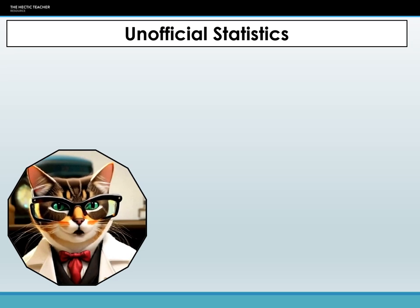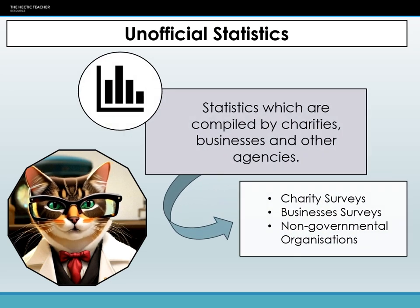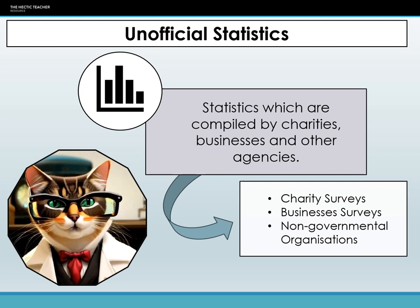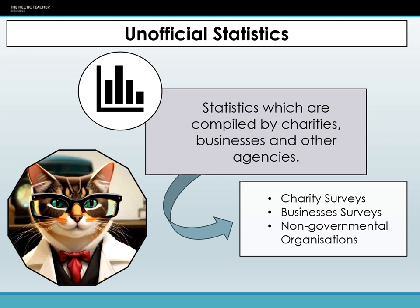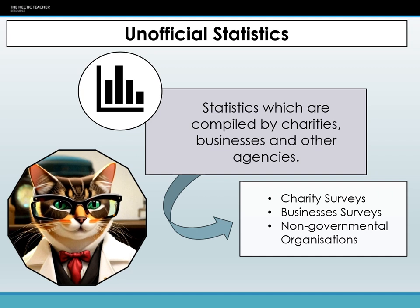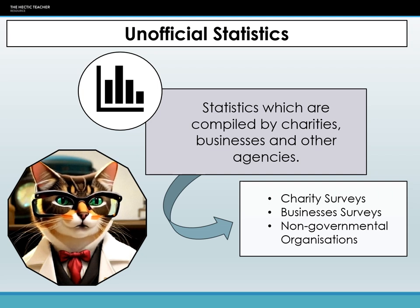Next is unofficial statistics. Unofficial statistics are those that are generated outside official governmental circles. Instead, they spring from a variety of sources like private research studies, newspapers, NGOs, or academic institutions. For instance, if an NGO concerned with environmental conservation conducted a survey in a particular city to understand residents' views on recycling habits, this would generate unofficial statistics.